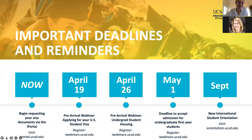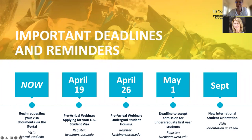Right now you can begin requesting your immigration documents for your student visa through the iPortal. Throughout April and into May, we'll have our upcoming webinars. May 1st is the deadline to accept your admission, and then we're so excited to welcome our students at New International Student Orientation in September. You can learn more about orientation at iorientation.ucsd.edu.